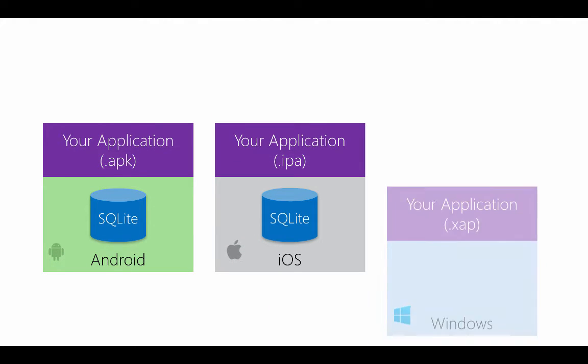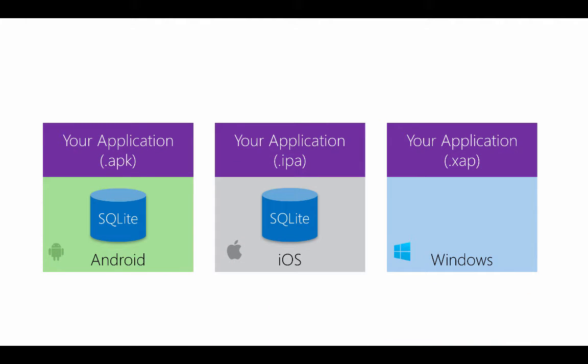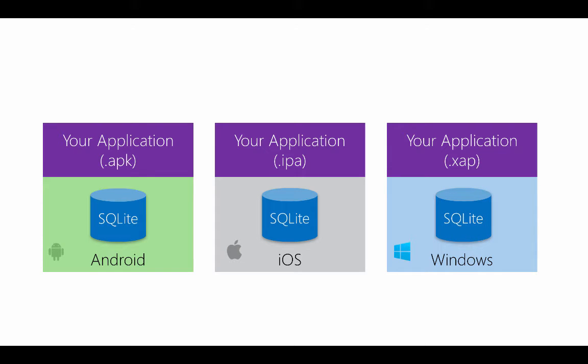The SQLite native libraries are built into Android and iOS, but they're not present in Windows. This means that if you're targeting any of the Windows platforms, it must be added to your application. We're going to use a NuGet package which includes a version of the SQLite runtime when added to a Windows application. However, there is one extra step you'll need to perform for Windows, which we'll talk about in just a minute.